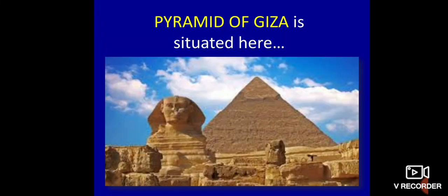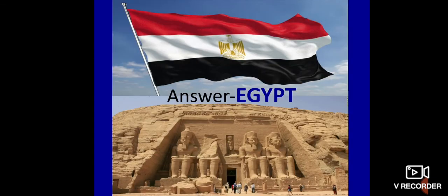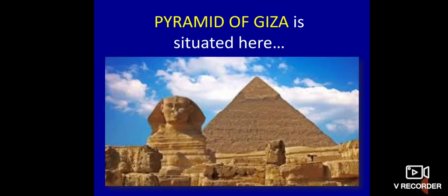Lovely. Chalye — the Pyramid of Giza. Is country mein Pyramid of Giza hai. Ham ne phir se batana hai name of the country — kis country mein Pyramid of Giza hai. The capital is Cairo — is country ki capital hai Cairo. The longest river, the Nile, flows through this country. I'm sure you all must have guessed. Yes — the answer is Egypt.